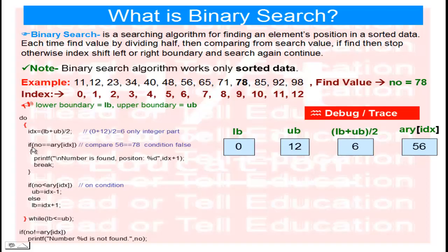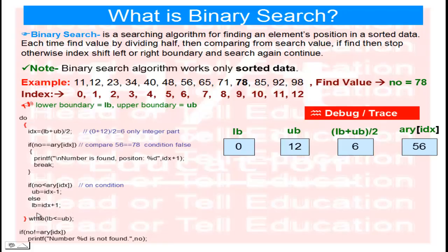Now check: is our search value 78 equal to 56? This condition is false — no match. Next check: is 78 less than 56? This condition is also false. So we go to the else branch, where the lower boundary index is updated to IDX + 1 = 6 + 1 = 7.